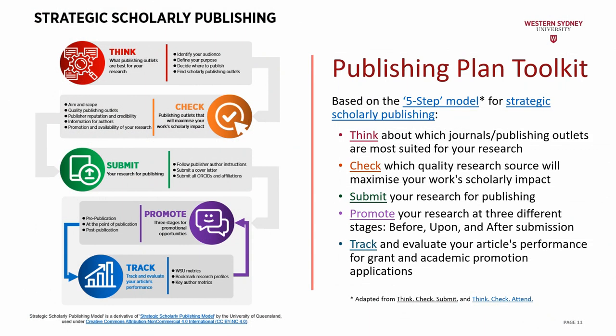Let's now look at the Publishing Plan Toolkit. The Publishing Plan Toolkit uses a five-step approach to help you develop a publishing plan suitable to your discipline, with the aim of maximising your research impact and engagement and supporting your career goals. The toolkit includes the core component — a publishing plan form — which you use to develop your publishing plan. This five-step approach to strategic scholarly publishing requires you to think about which publishing outlets are most suited to your research, your intended audience, your research goals and expected real-world research impact, the requirements you need to comply with, for example to publish open access, available funding, and your publishing timeline.